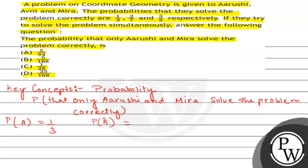The probability that Aryoshi does NOT solve the problem correctly is 1 minus 1/3, which equals 2/3. The probability of Avani solving the problem correctly — that is P(B) — is 2/7.